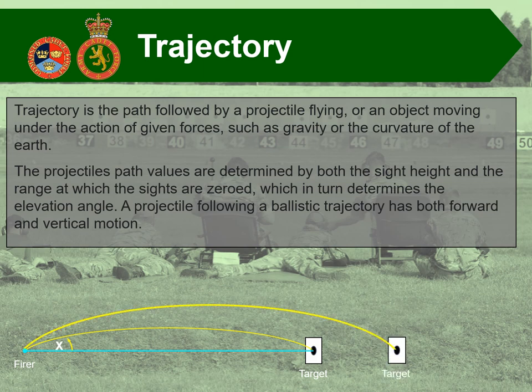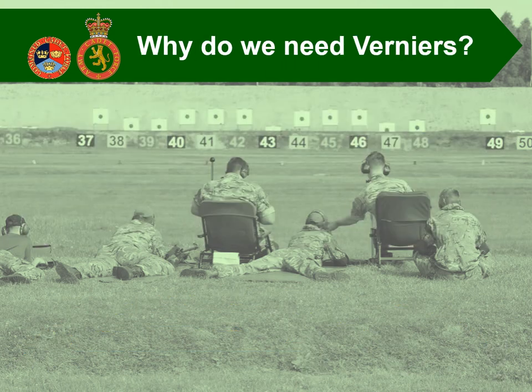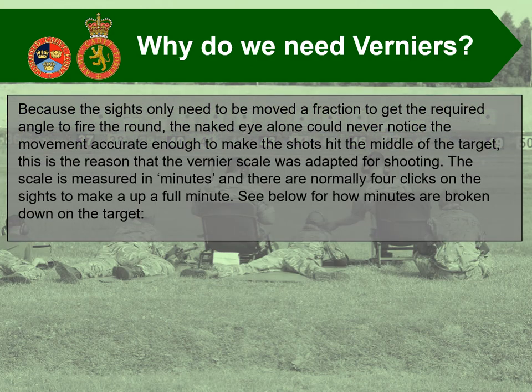As you get further away from the target, that angle needs to be increased. So why do we need verniers? Because the sights only need to be moved a fraction to get the required angle to fire the round, the naked eye alone could never notice the movement accurately enough to make the shots hit the middle of the target. This is the reason that the vernier scale was adapted for shooting.